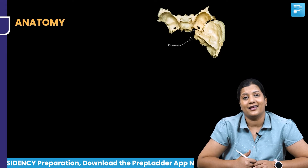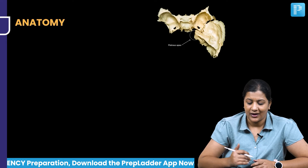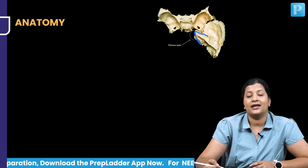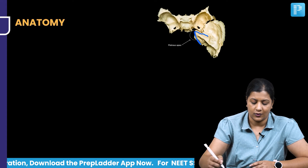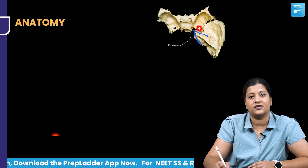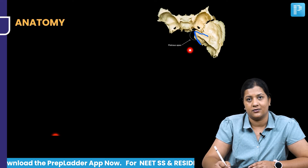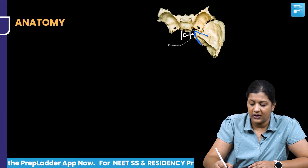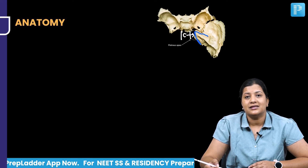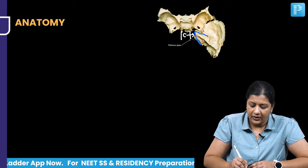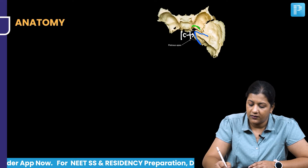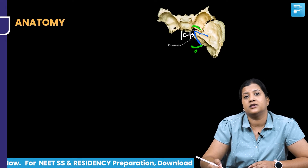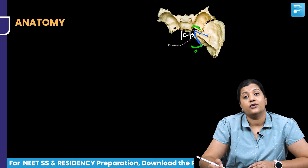The petrous bone is a leaf-like bone located between the greater wing of the sphenoid and the occipital bone. The greater wing of the sphenoid lies anteriorly, the occipital bone posteriorly, and the clivus lies medially. The apex of the petrous bone is adjacent to the clivus, which forms its medial boundary.